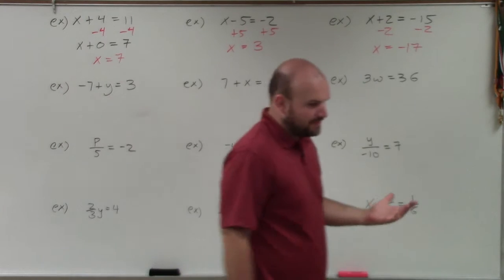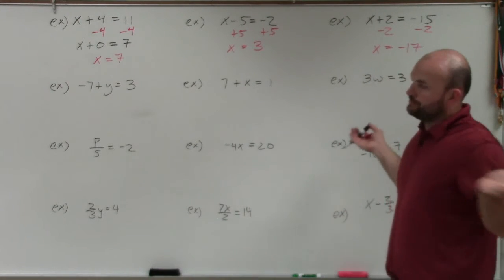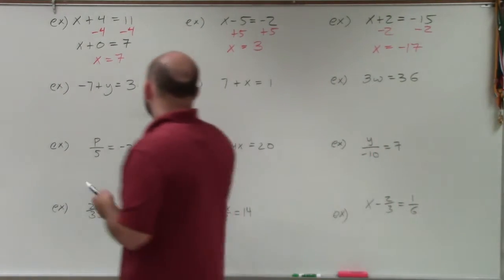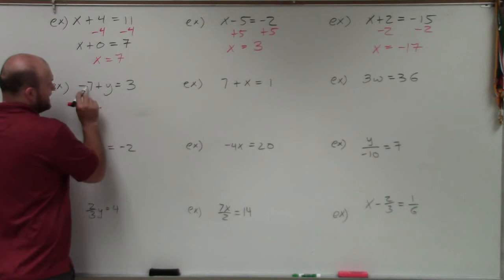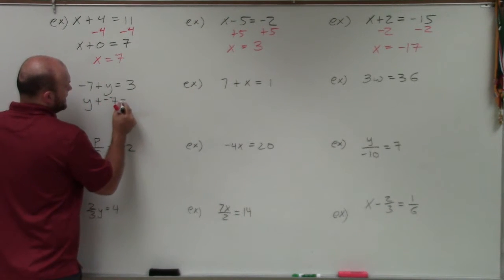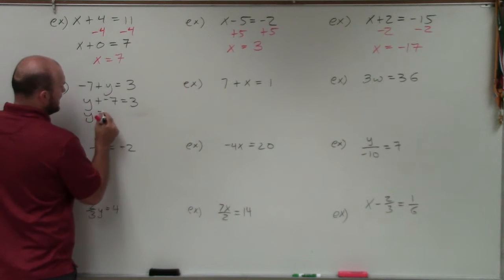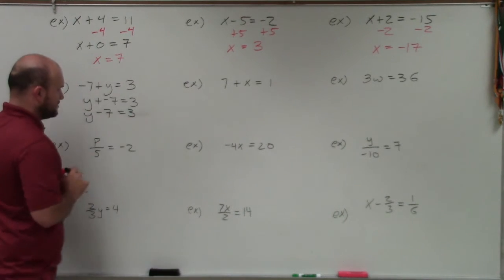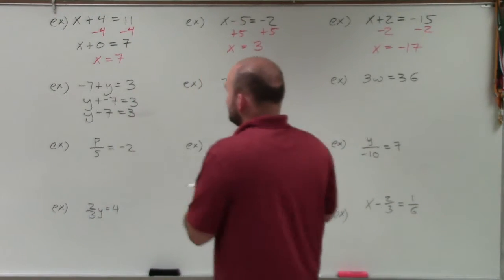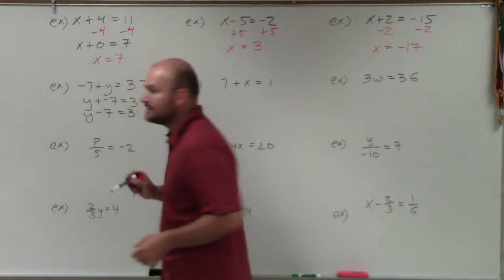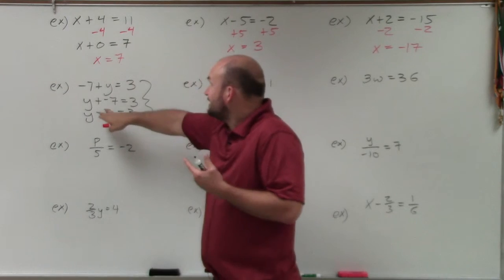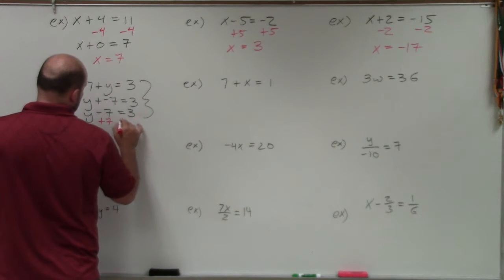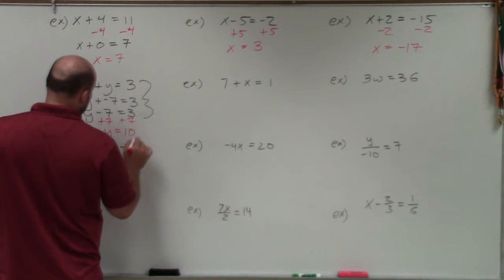Now the next two become a little tricky because students will say, are you adding or subtracting? The best thing to do is always write your variable in front. So I can rewrite this as y plus a negative 7 equals 3, which is the same as y minus 7 equals 3 — they're exactly equivalent. Writing it this way, it's much easier to see that y is being subtracted by 7, so I need to add 7 to both sides. My final answer is y equals 10.